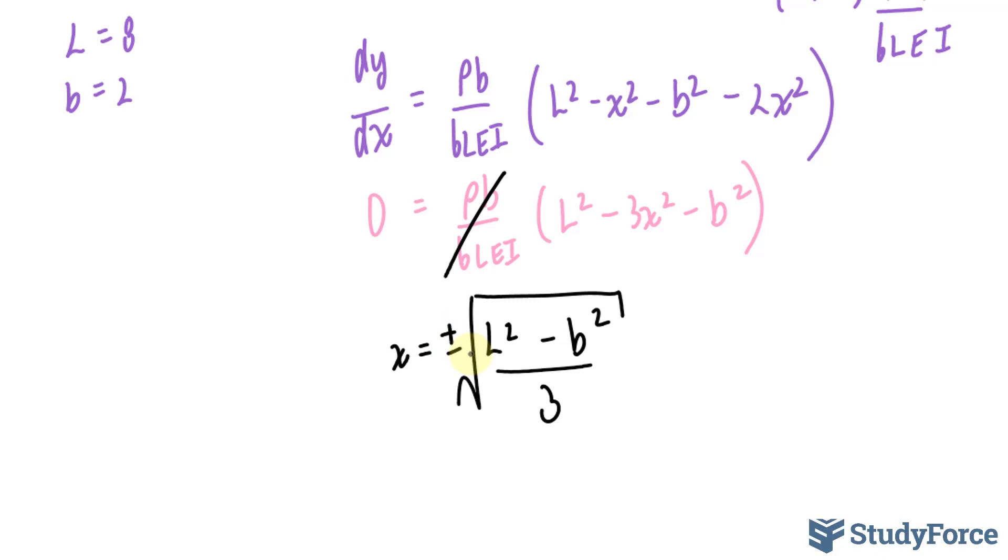Now I can substitute L and b into here. Now you see why I waited. It actually is a lot easier to evaluate. We're left with 64 minus 4 over 3. We'll take the square root of that next, which gives us plus minus 4.47 meters.